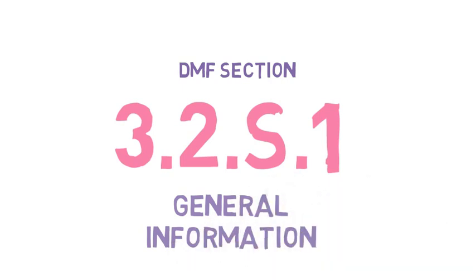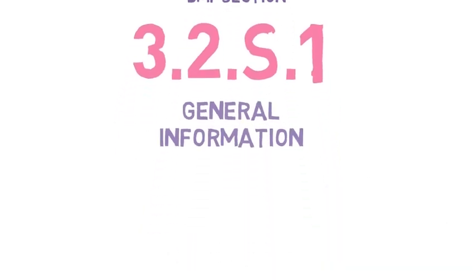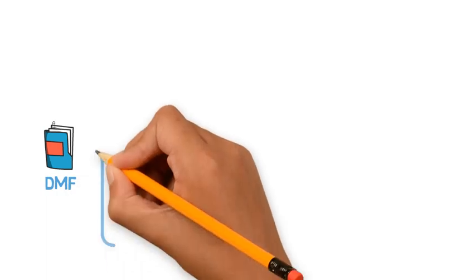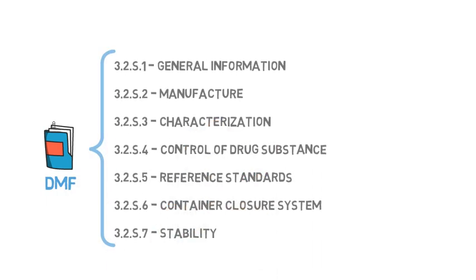DMF Section 3.2.s.1 General Information. In the previous video, we have shown that the DMF, in a CTD format, consists of 7 sections.